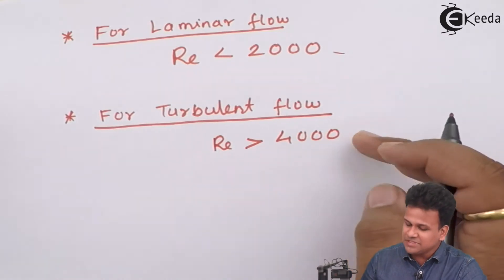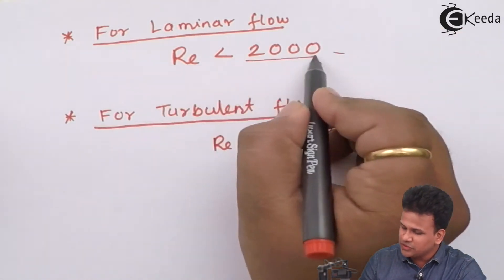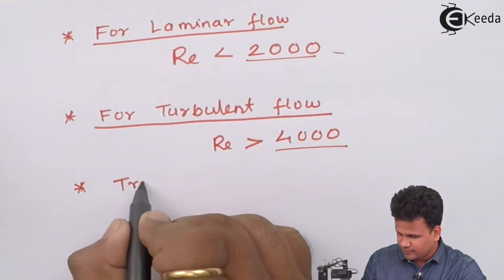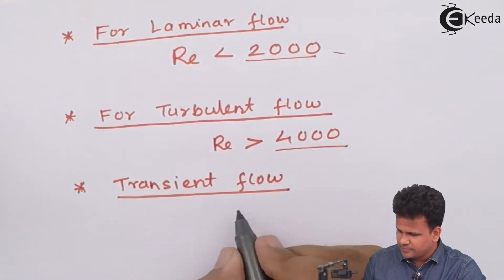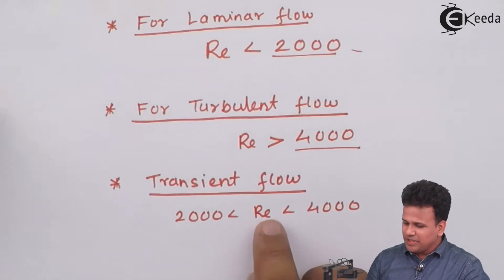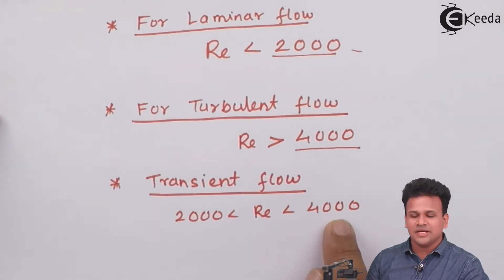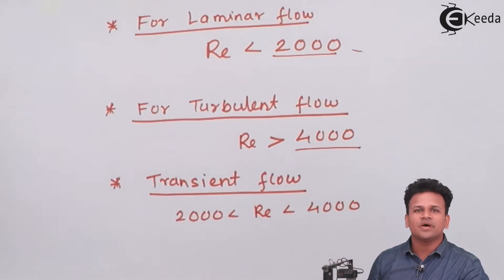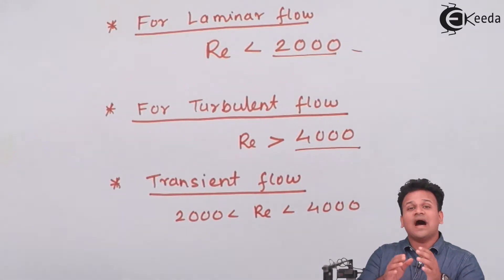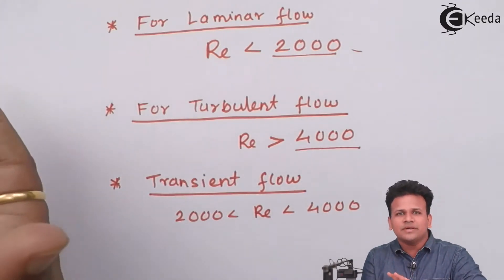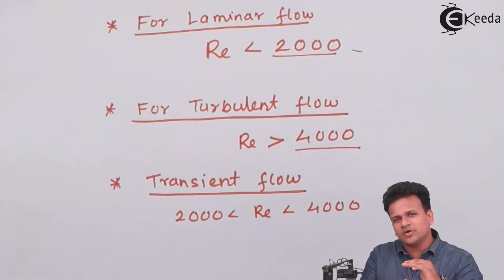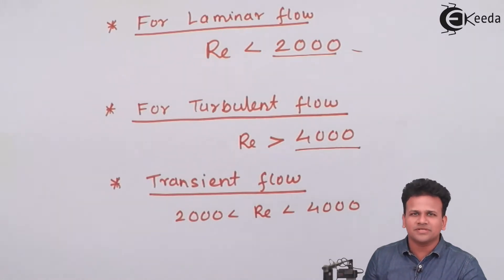If the Reynolds number lies between 2000 and 4000, the flow is called transient flow. Transient flow is the flow in which fluid is either going from laminar to turbulent or from turbulent to laminar. In between, sometimes the adjacent layers intermix with each other and sometimes they do not.